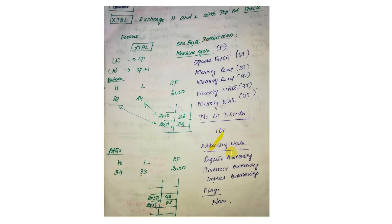What is the addressing mode? This is a register indirect addressing mode, because we exchange using the stack pointer address. There is also an implicit addressing mode involved. No flag is affected by the XTHL instruction.